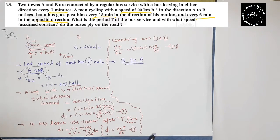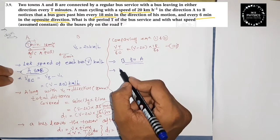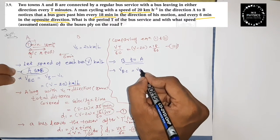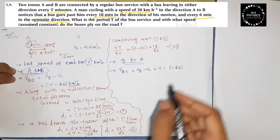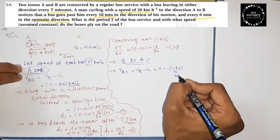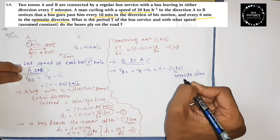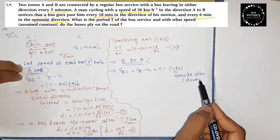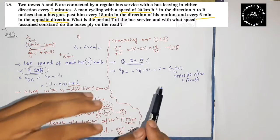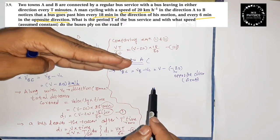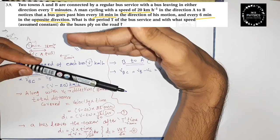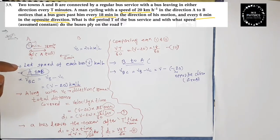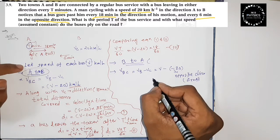For B to A, the relative speed of the bus with respect to the cyclist: since they are in opposite directions, the velocity of the bus with respect to the cycle is V minus (minus 20), which gives V plus 20. In the A to B case both moved in the same direction, so we used V minus 20. Now bus and cycle are opposite, so we use V plus 20.